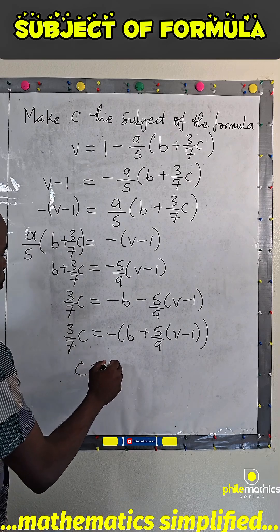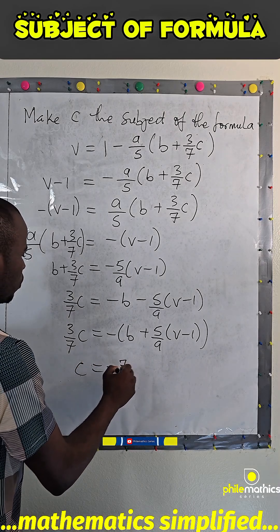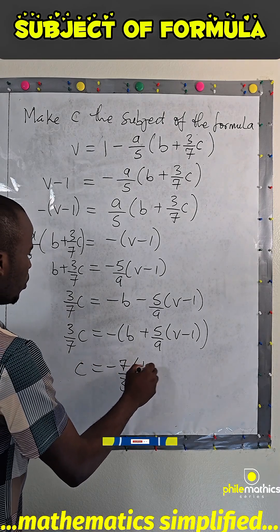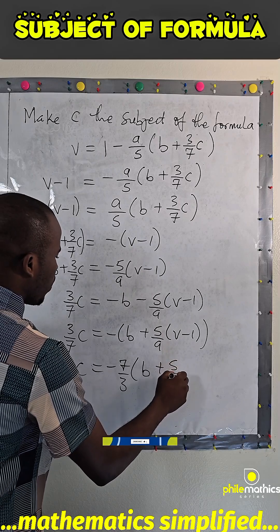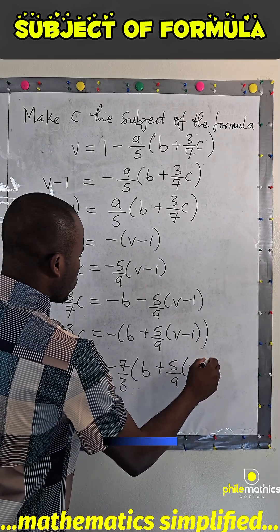So, if I do that, I will have C equals minus 7 over 3, B plus 5 over A, V minus 1.